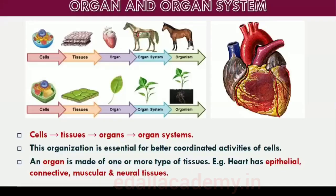In the preceding chapters you came across a large variety of organisms, both unicellular and multicellular, of the animal kingdom. In unicellular organisms, all functions like digestion, respiration and reproduction are performed by a single cell. In the complex body of multicellular animals, the same basic functions are carried out by different groups of cells in a well-organized manner.